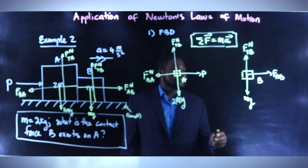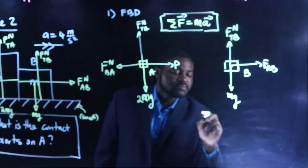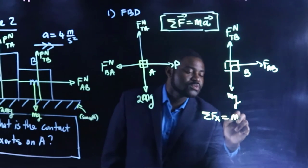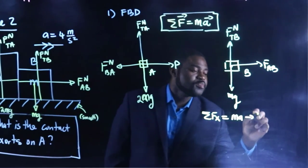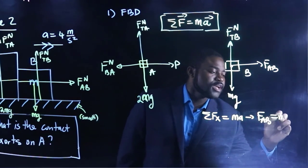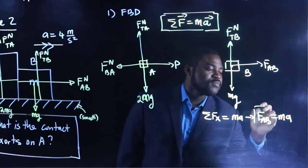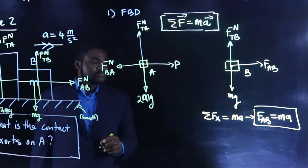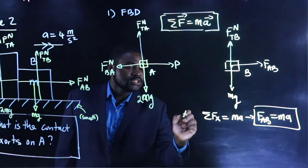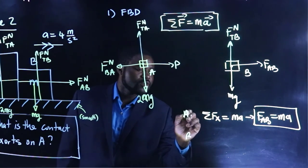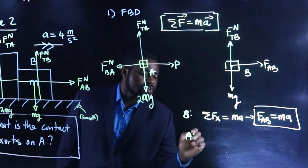So, let's start with B. We know that the sum of forces in the x direction is just going to be equal to MA. This means that FAB is equal to MA. Keep this in mind. So, this is for block A. Sorry, this is for block B. So, let's do block A.